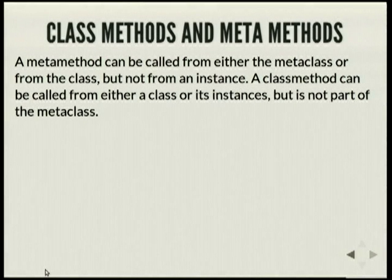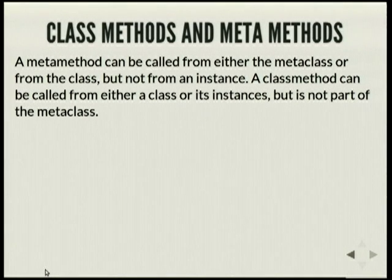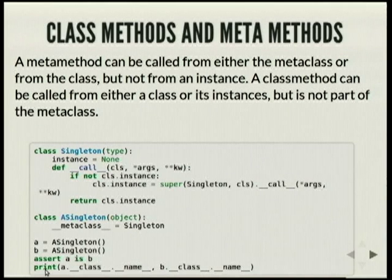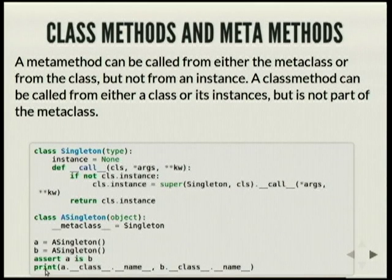A meta method can be called from either the metaclass or from the class, and an instance method can be called from the class or an instance. This is an example of a singleton: we're writing a meta __call__ method that says if instance is not defined, we create an instance; otherwise we just return that instance. So only one instance of that class will ever get created.